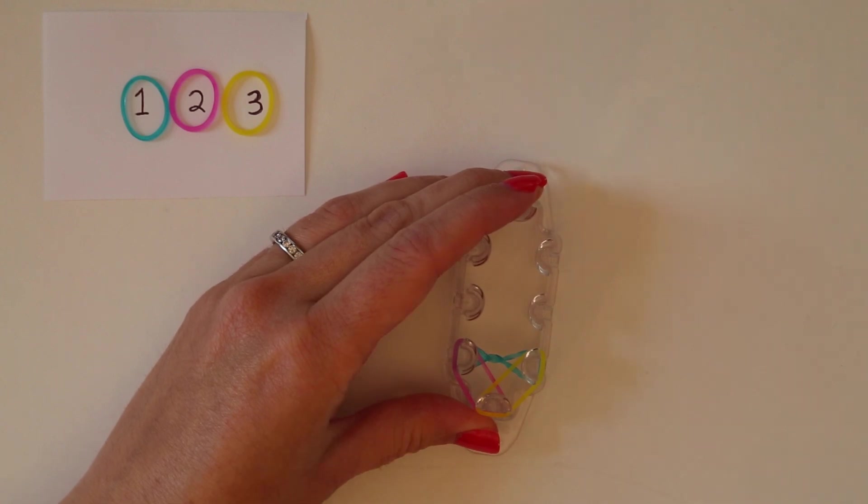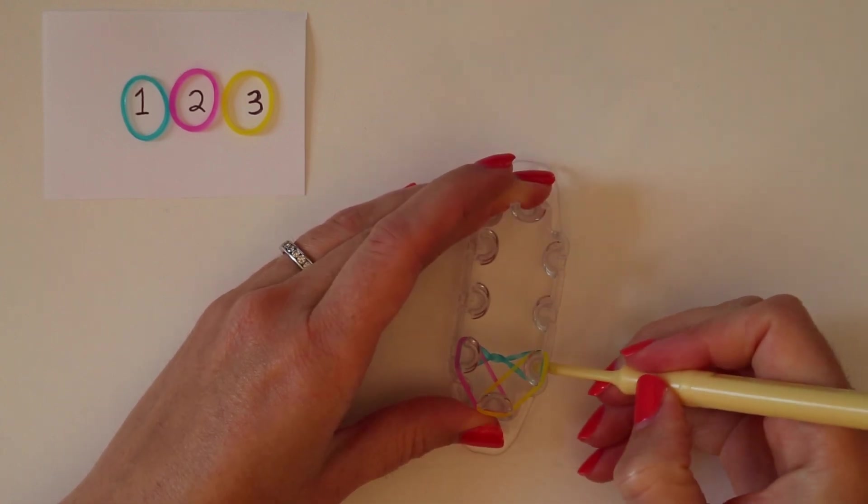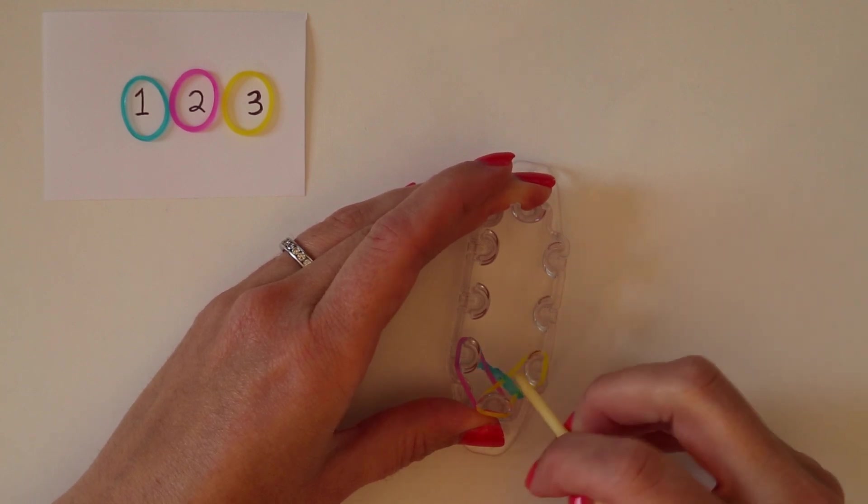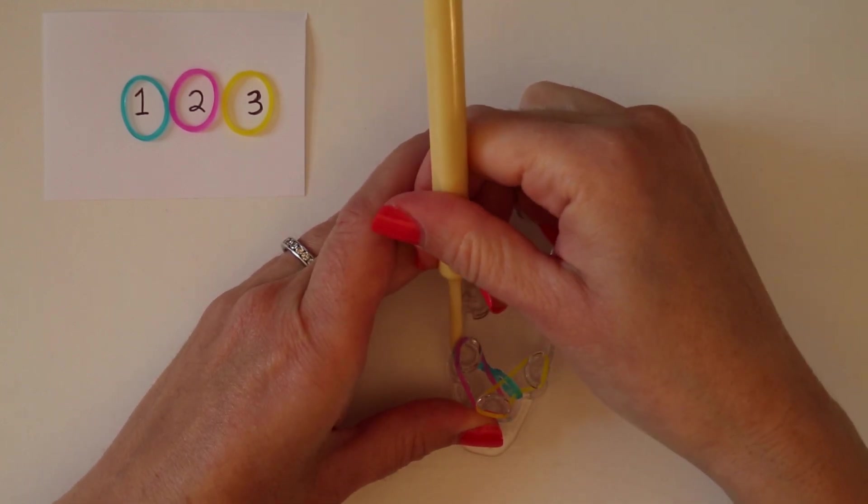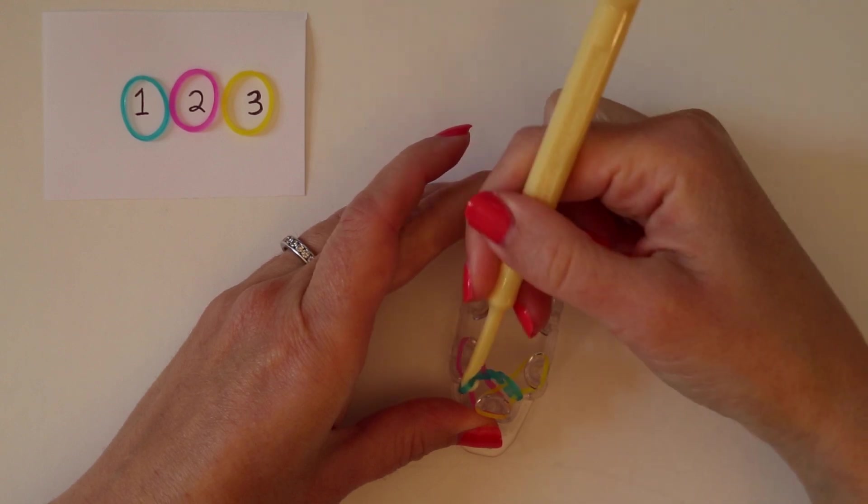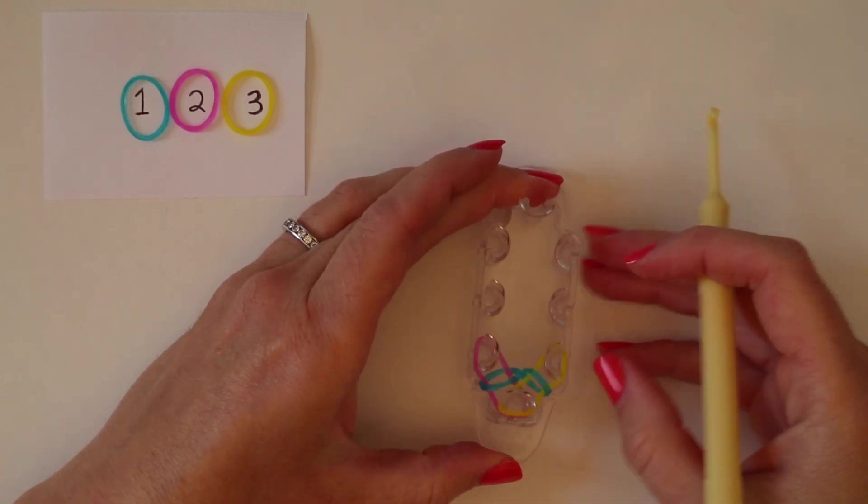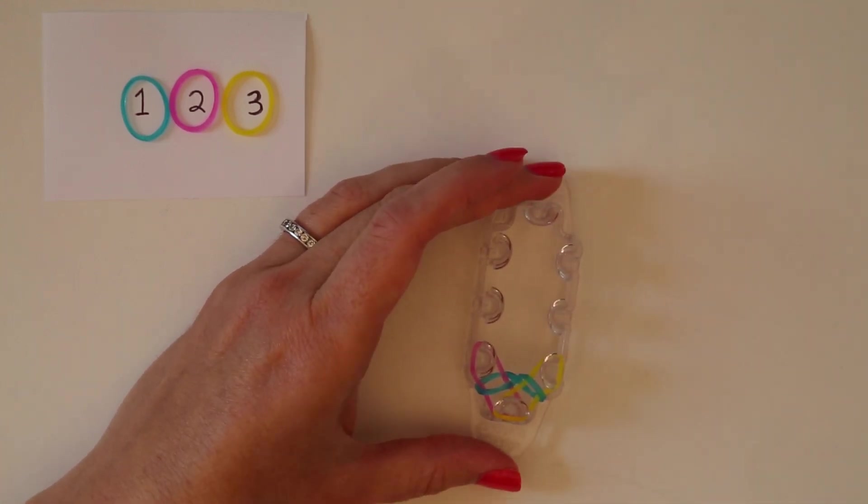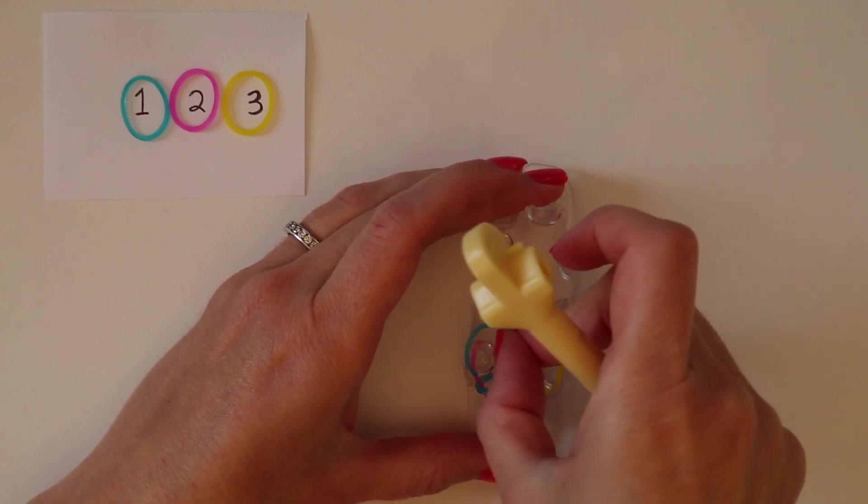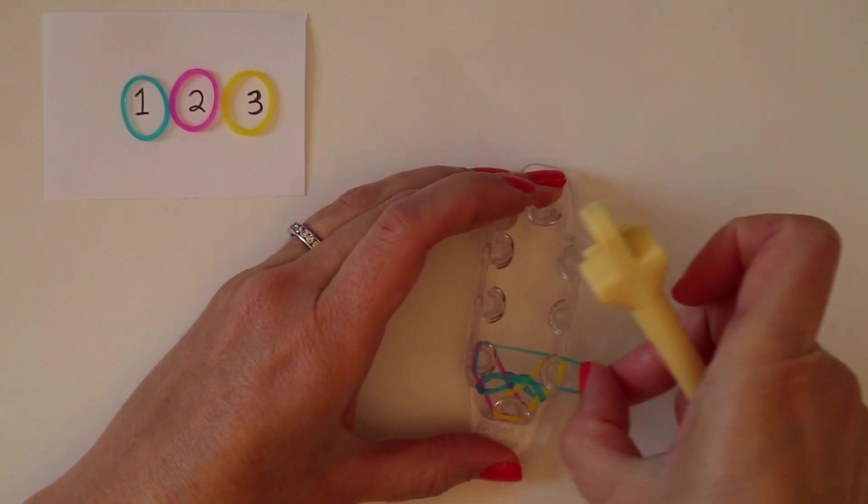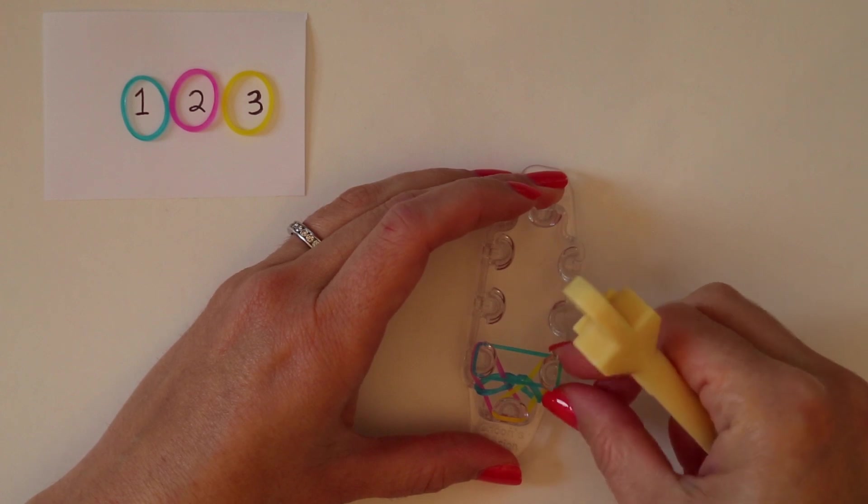Then, grab your hook and bring color one up on both sides. Then, we're going to replace color one on those back two pegs. No twisting required anymore.